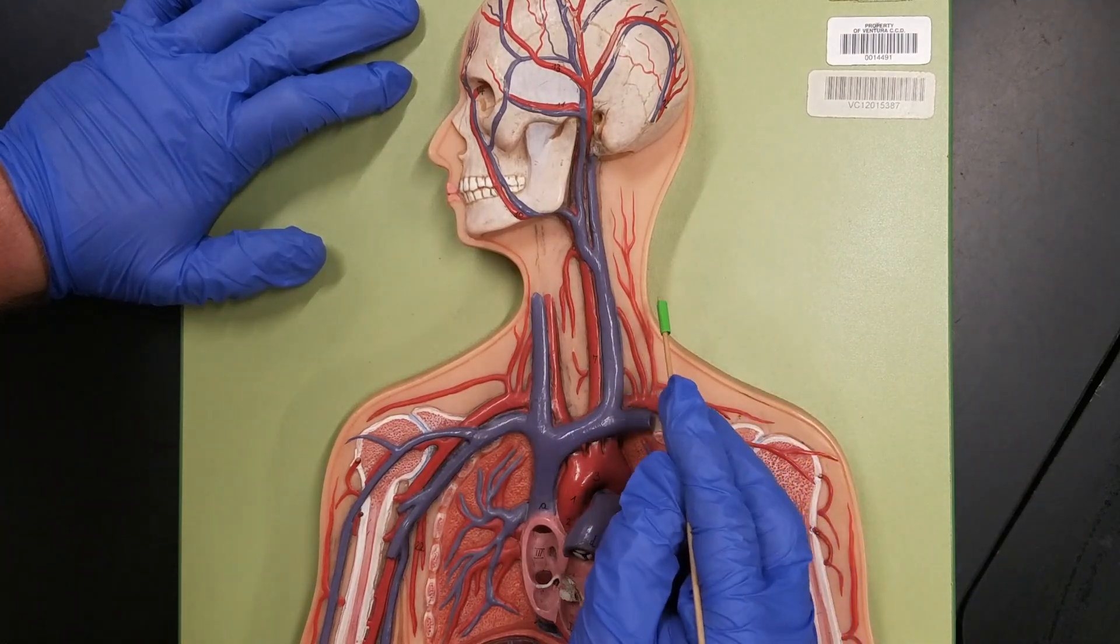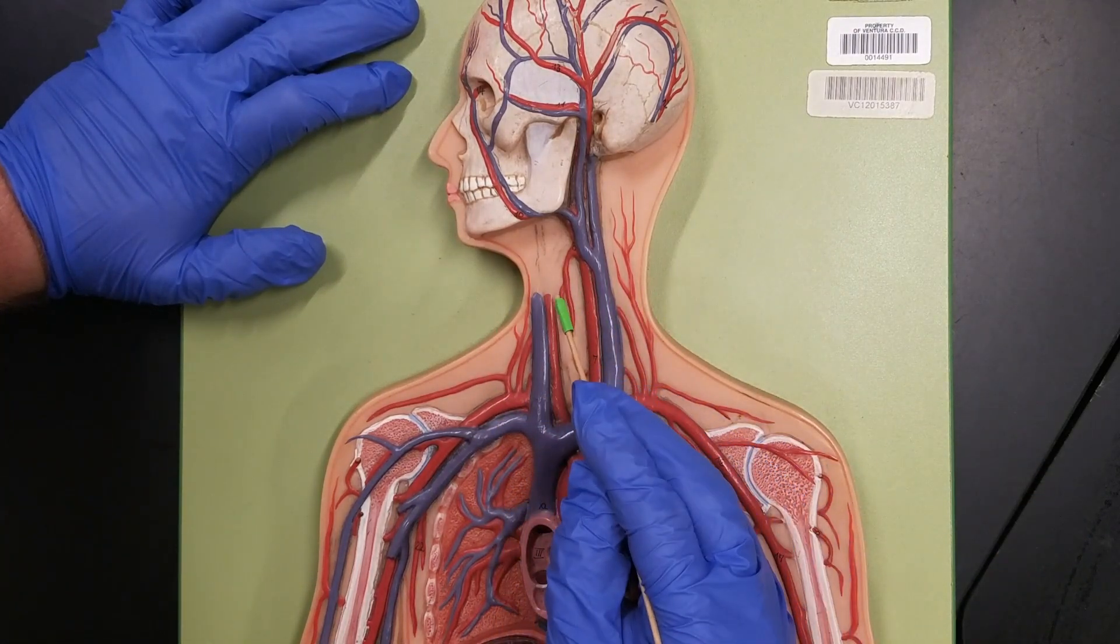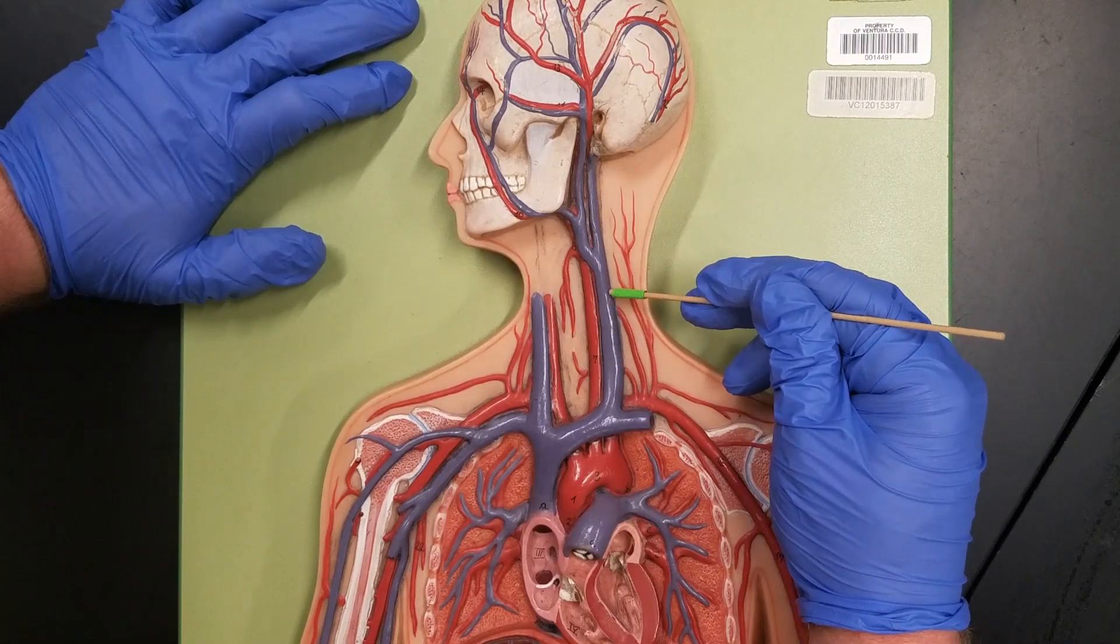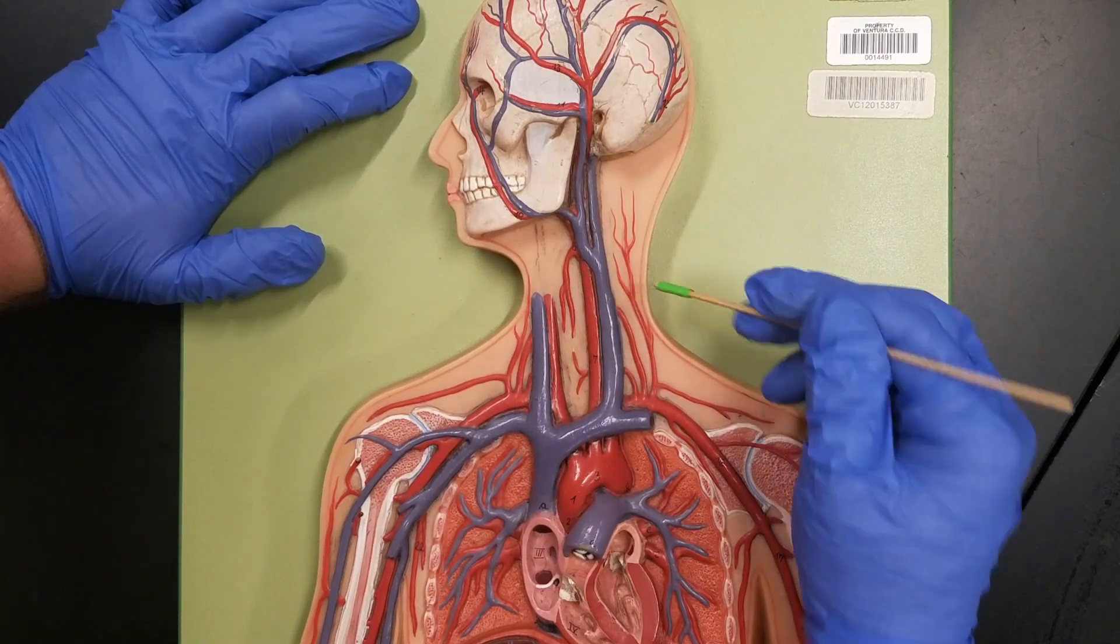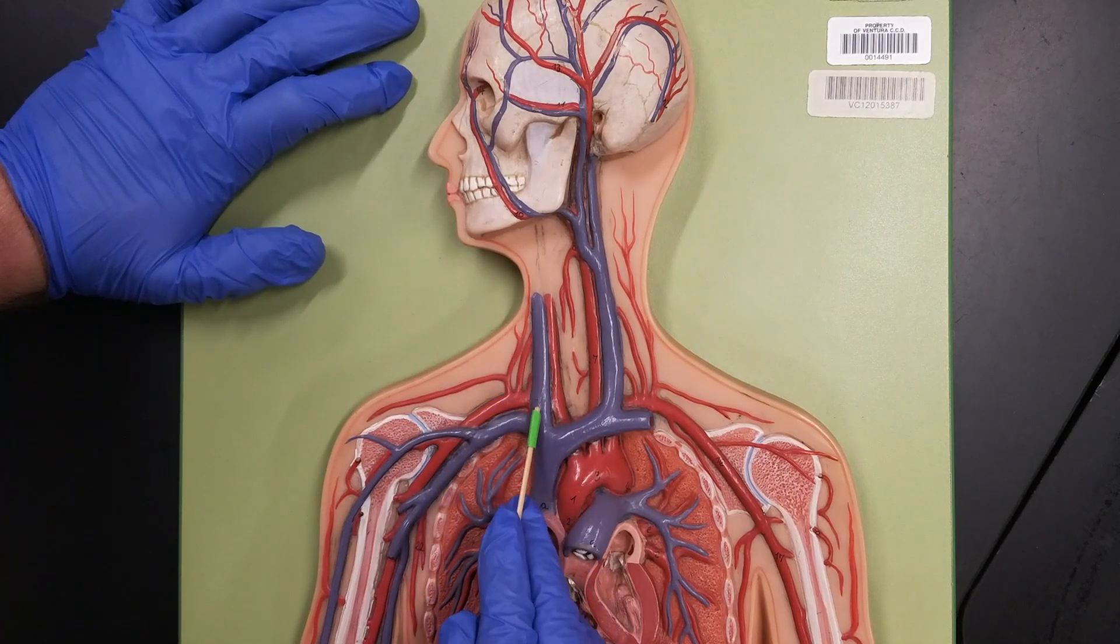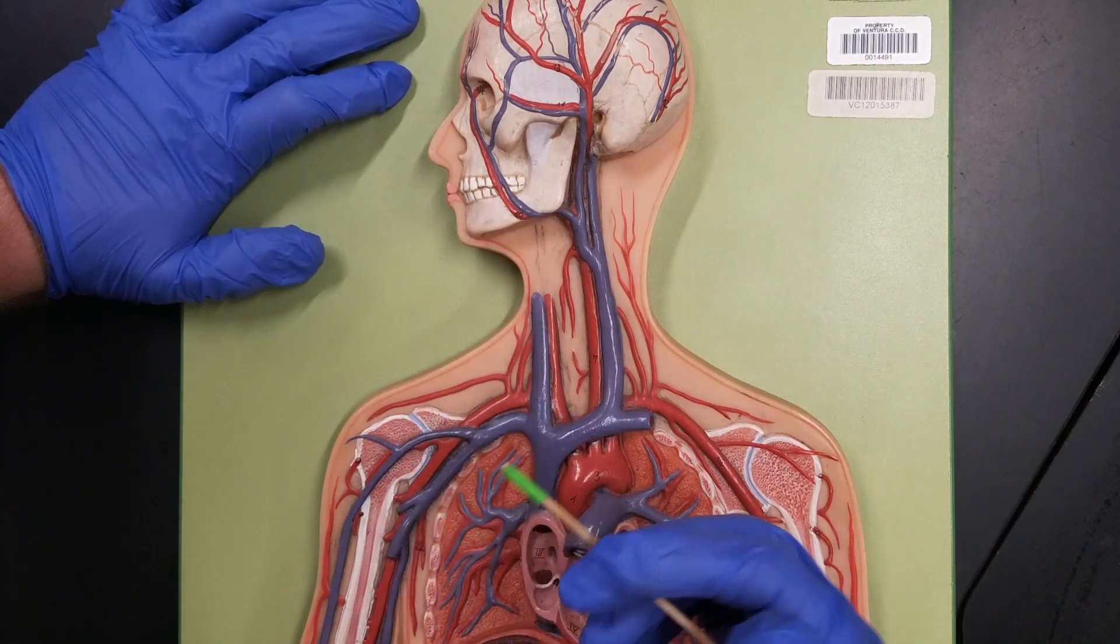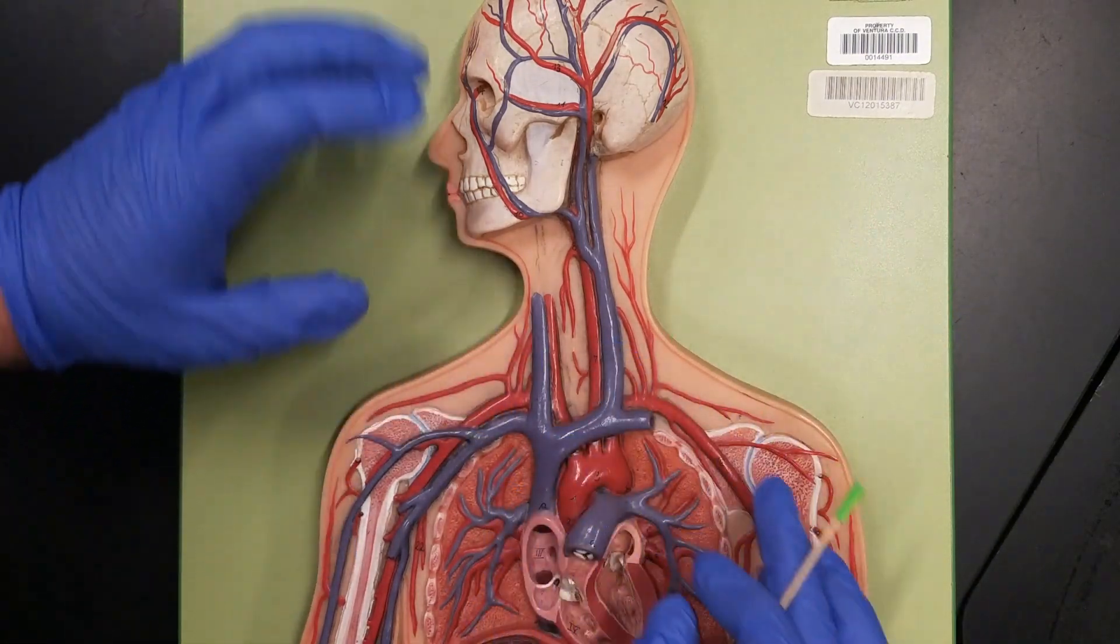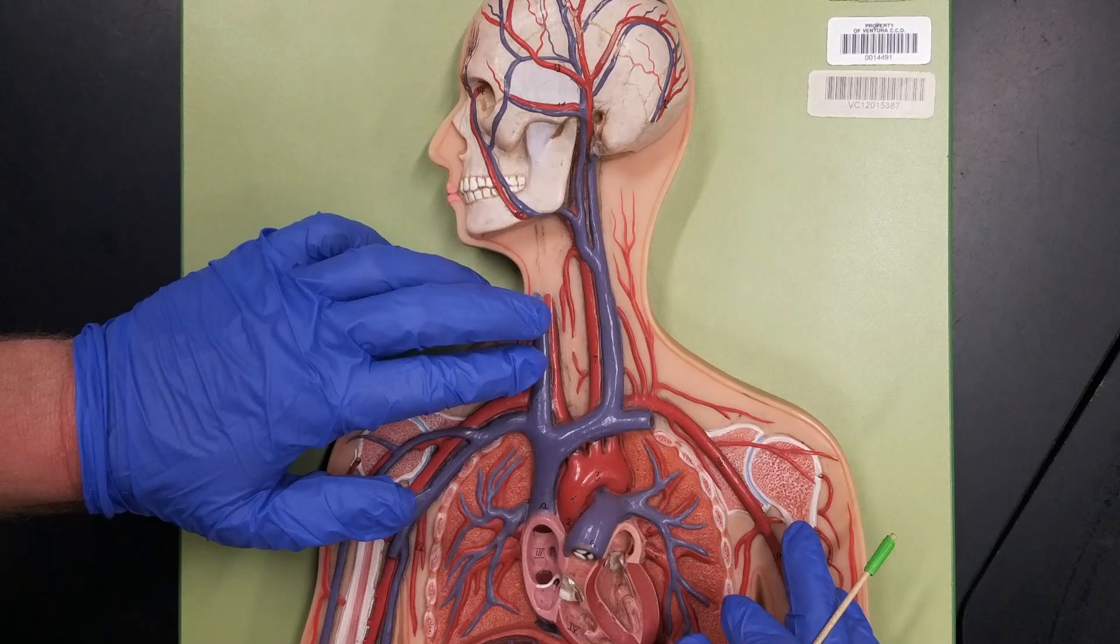We'll start by looking at the veins in the neck region. So here we can see our left internal jugular vein, and on this side we can see the right internal jugular vein. Jugular comes from the Latin word that means neck, so these veins are responsible for draining blood from the head and neck regions.